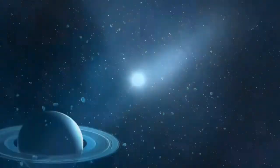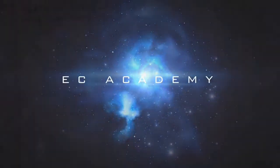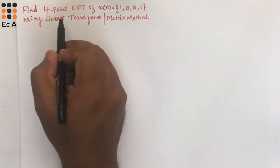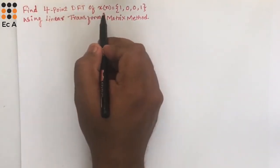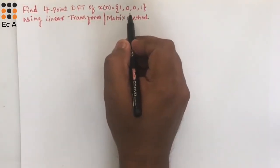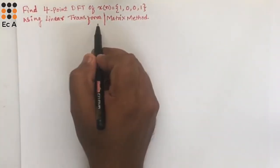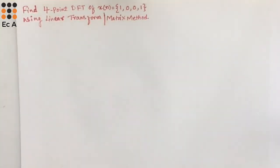Hello friends, welcome to EC Academy. In this lecture, let us understand how to find a 4-point DFT of the sequence x(n) = {1, 0, 0, 1} using linear transformation, which is also the matrix method.